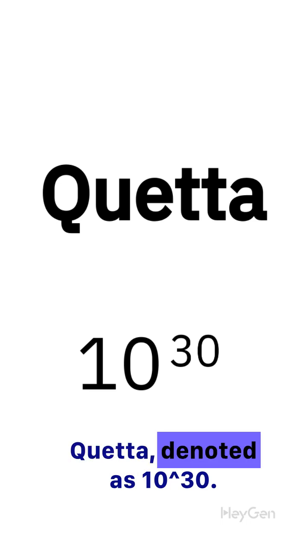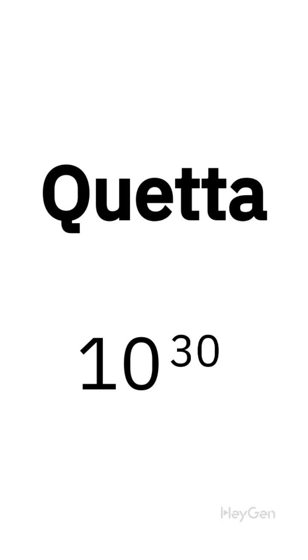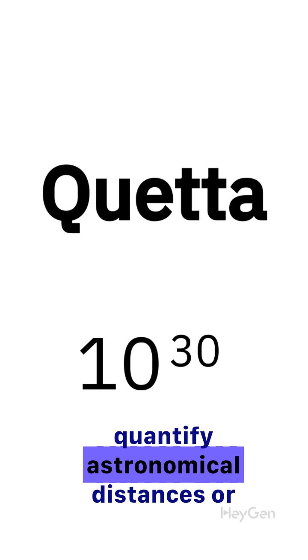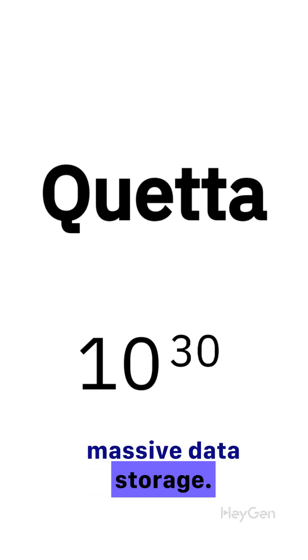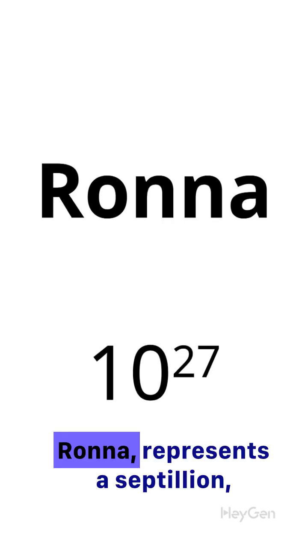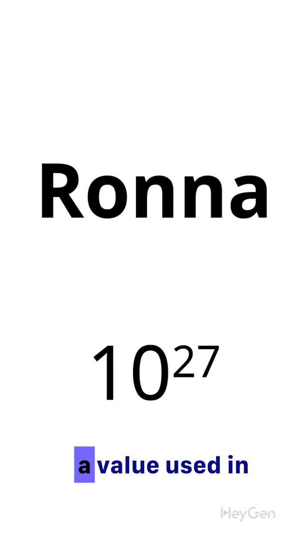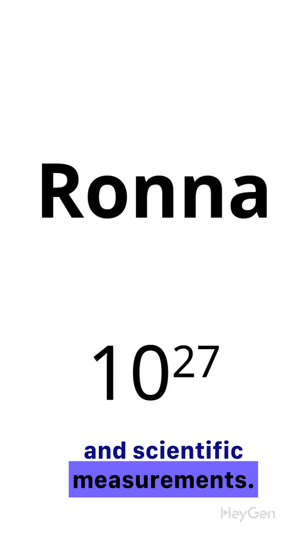Queta, denoted as 10^30, is used to quantify astronomical distances or massive data storage. Ronna represents a septillion, a value used in fields like data storage and scientific measurements.